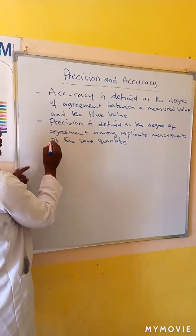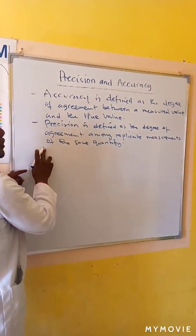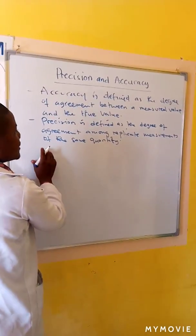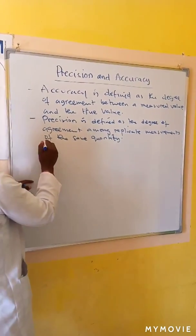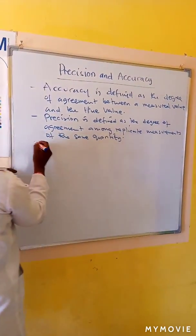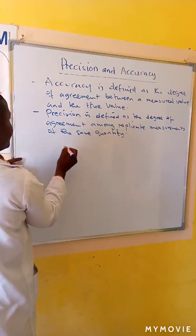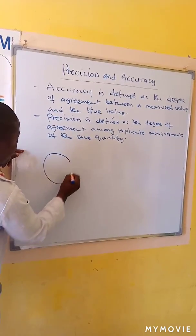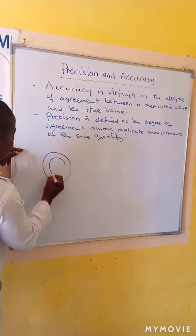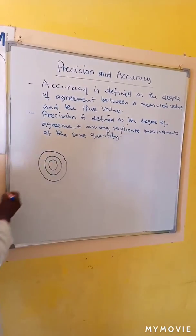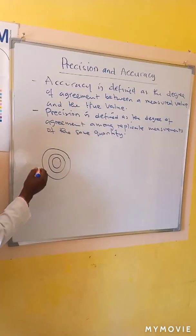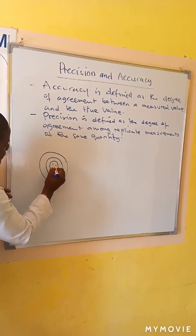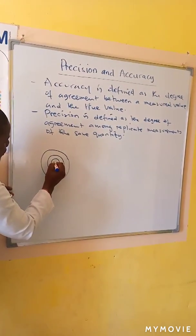Good precision does not assume good accuracy. For example, if there were a systematic error in the analysis. The two terms can be illustrated in the following diagrams. Suppose you are target practice and all your bullets land here.